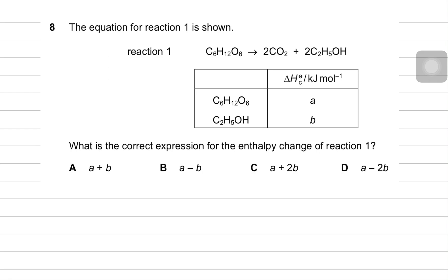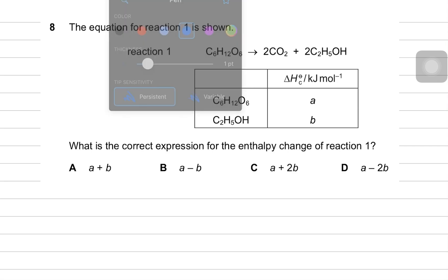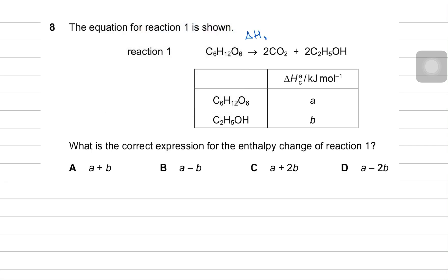Let's look at this question. The equation for reaction one shows you reacting C6H12O6 and making carbon dioxide and ethanol. We can't call it combustion because you are not getting carbon dioxide and water, and it's not even formation, so let's simply call it enthalpy of reaction. The data also gives us the combustion enthalpy for the C6 compound and for ethanol.